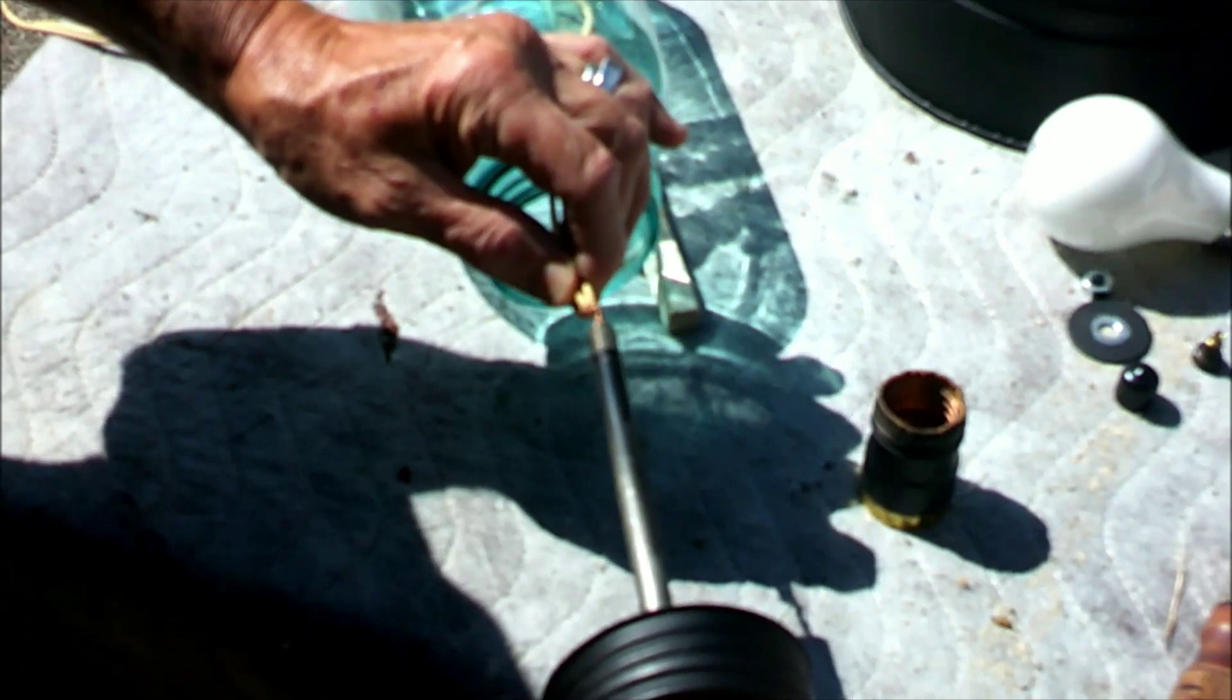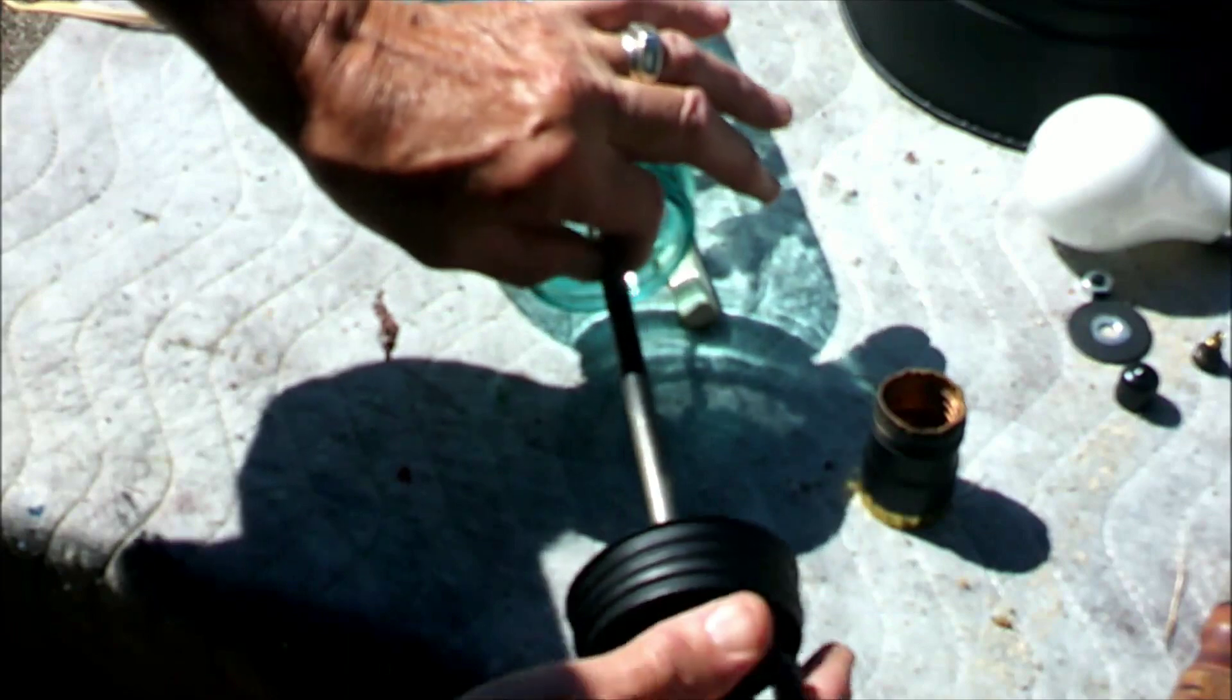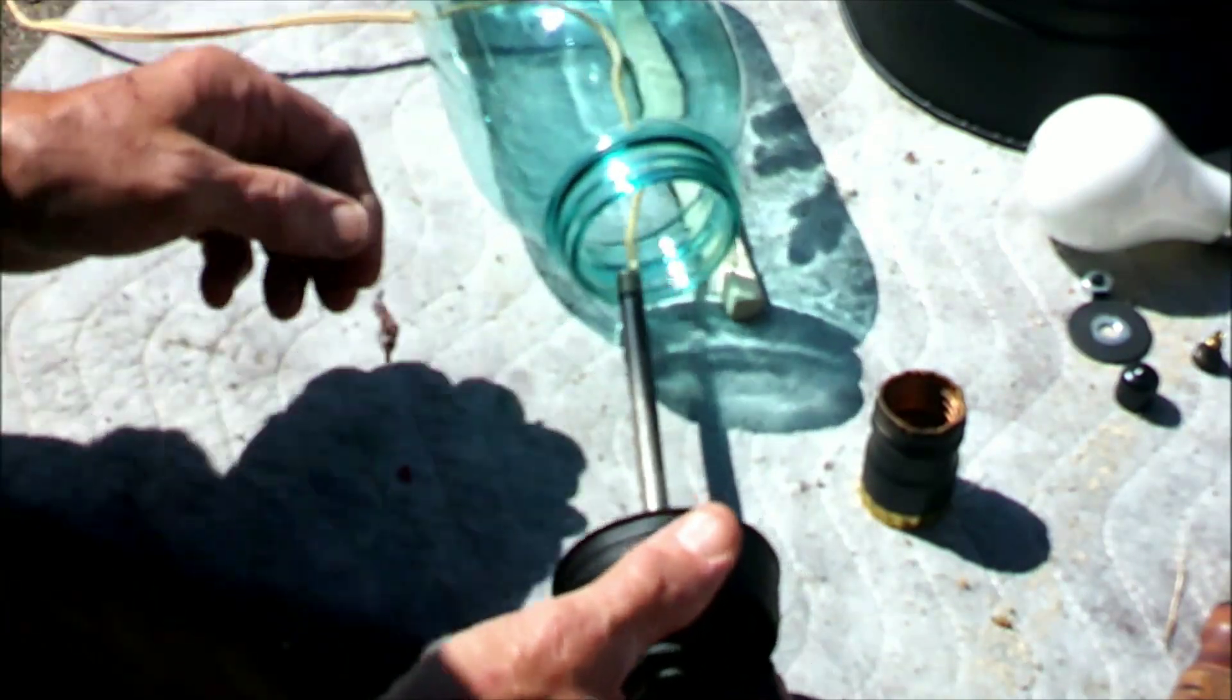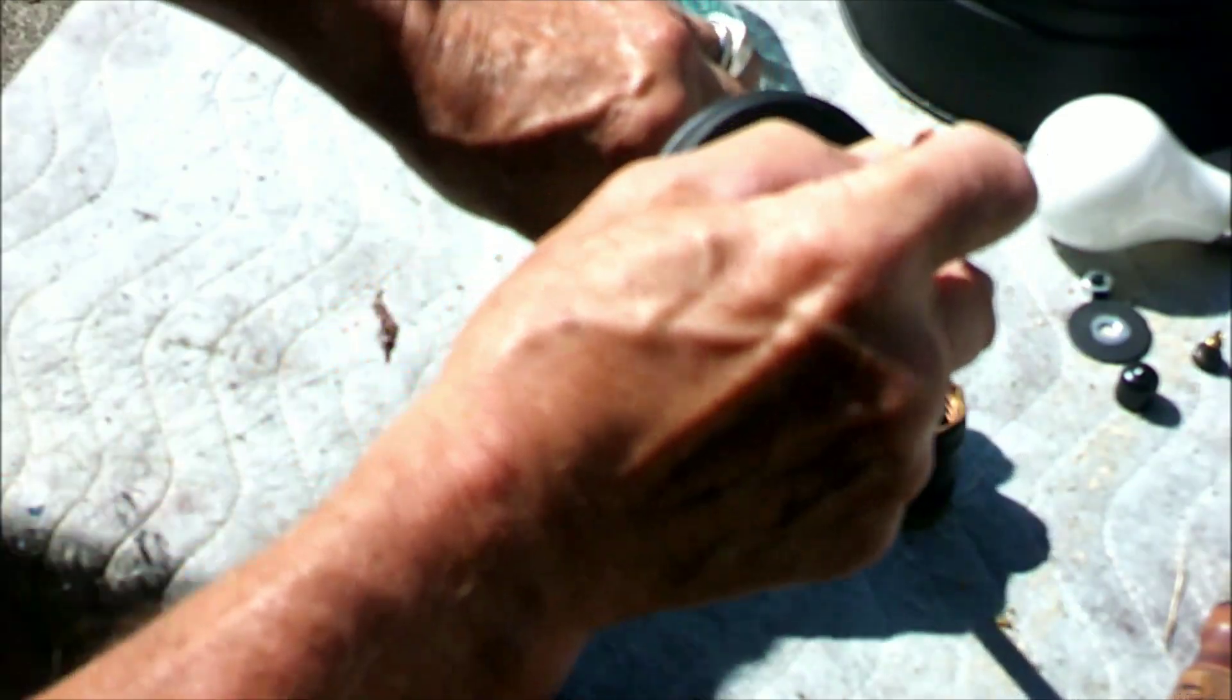Now after running the wire through the canning jar, you have to run it up through this tube and out the top. And we're going to go ahead and connect the two wires to the fixture.